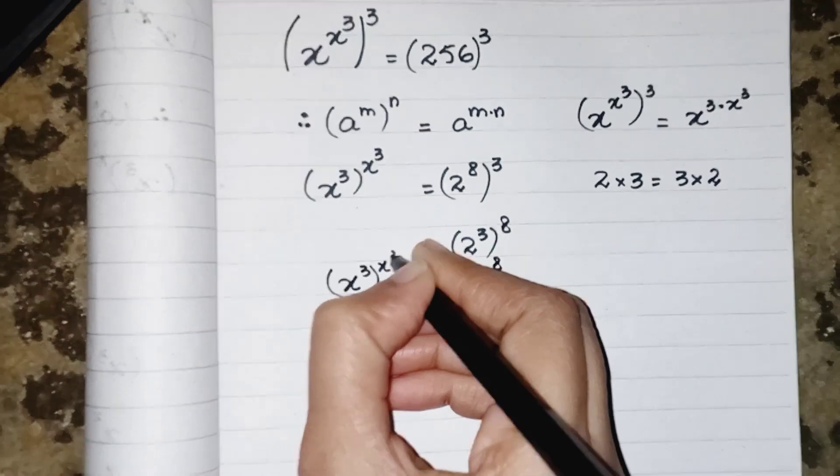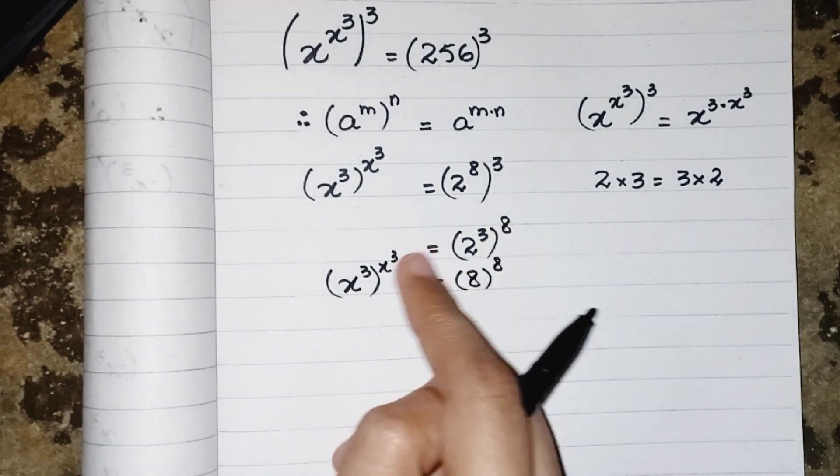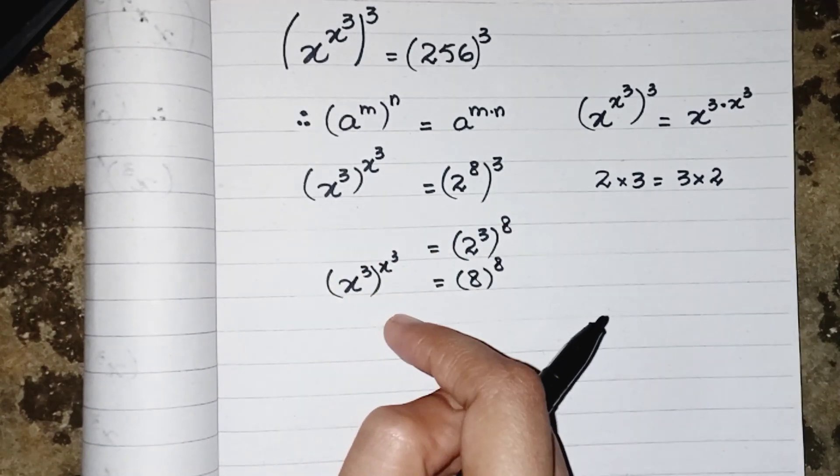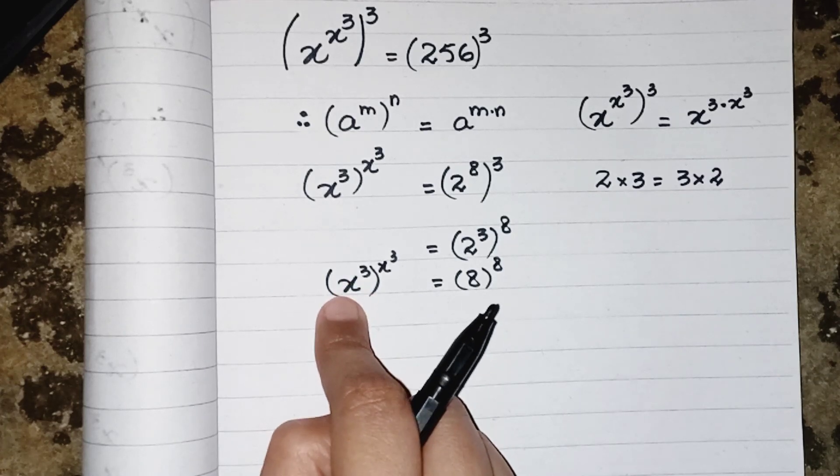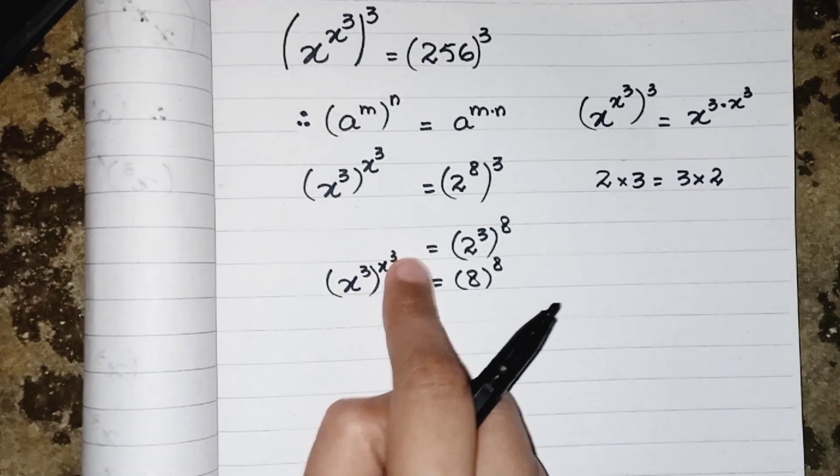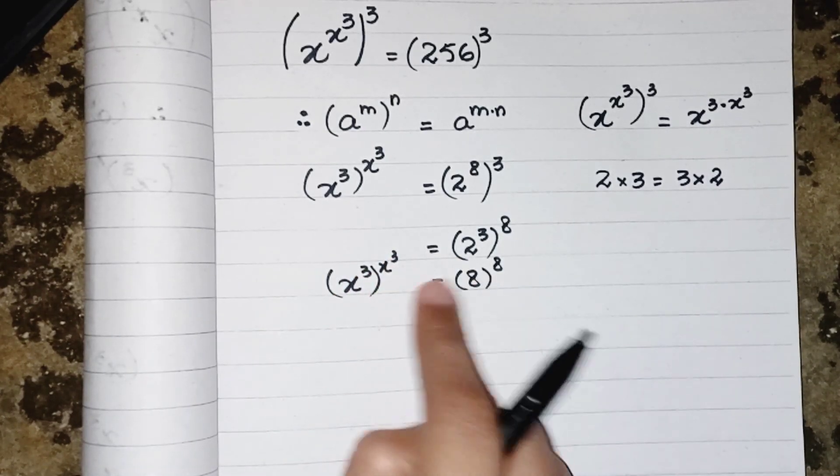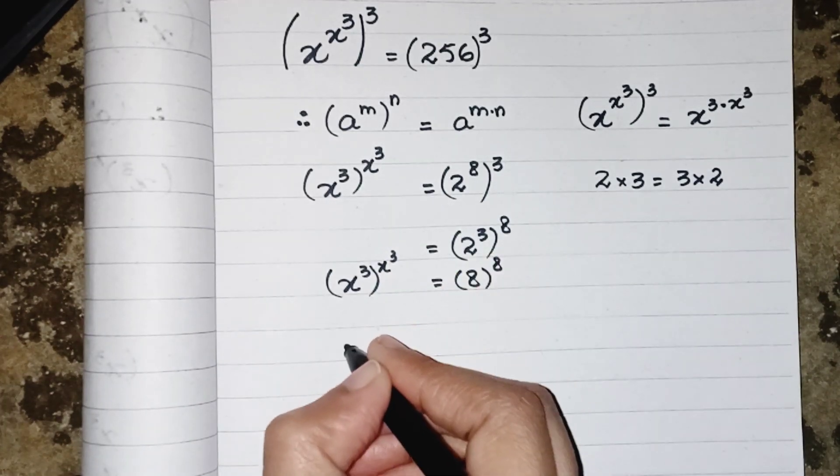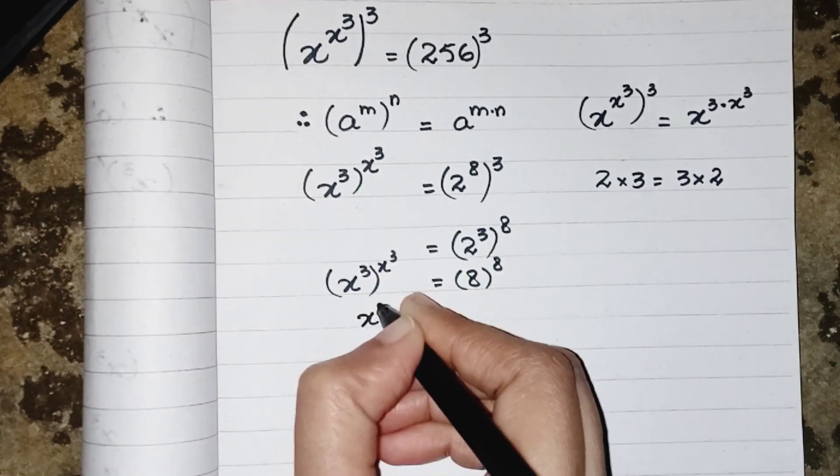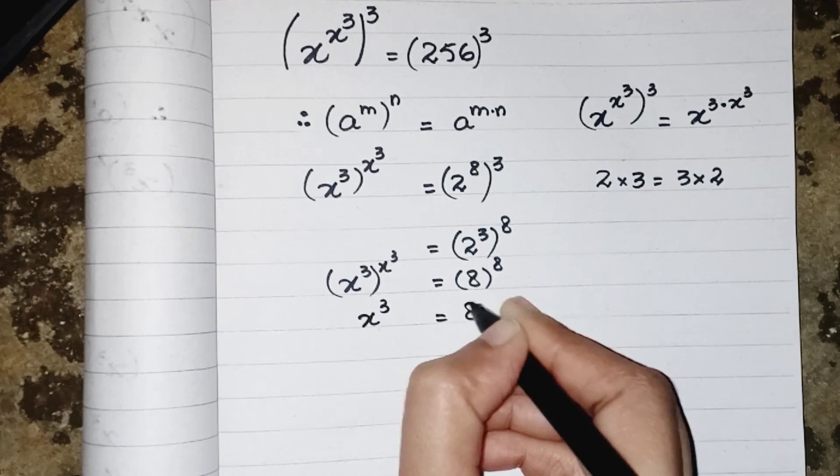Over here we have base as x to the power 3 and the power is also same, so we are just equating them. So we can say that x cubed equals 8.